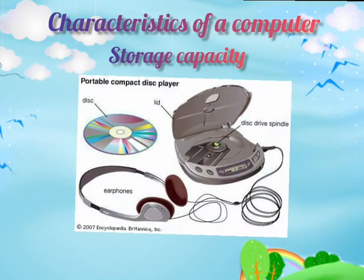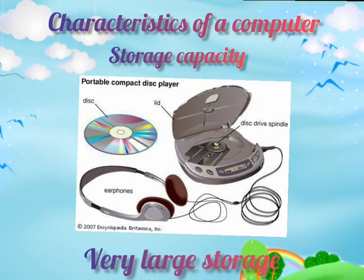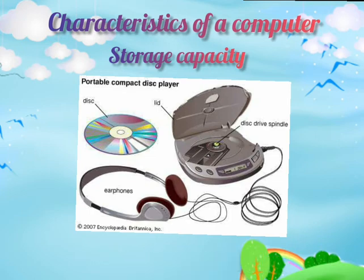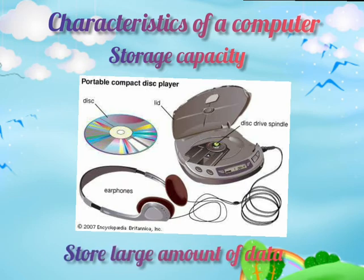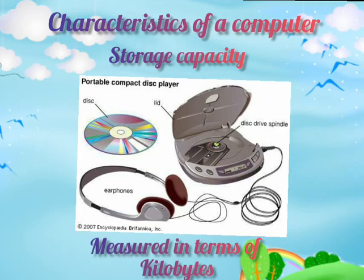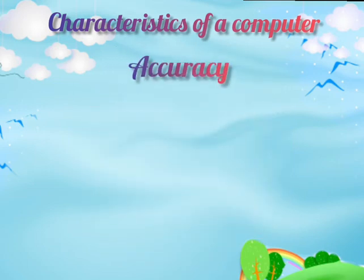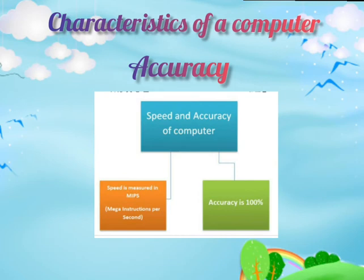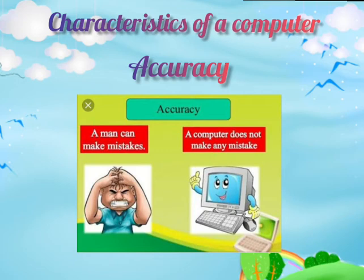Second, Storage Capacity. A computer has a very large storage capacity. It can store large amounts of data and information which can be retrieved correctly as and when required. The storage capacity of computers is measured in terms of kilobytes. Third, Accuracy. Computers give accurate results. If the input data and set of instructions given to it are correct, the output will be accurate. Computers never make mistakes unless you give wrong input, in which case you will get incorrect results.